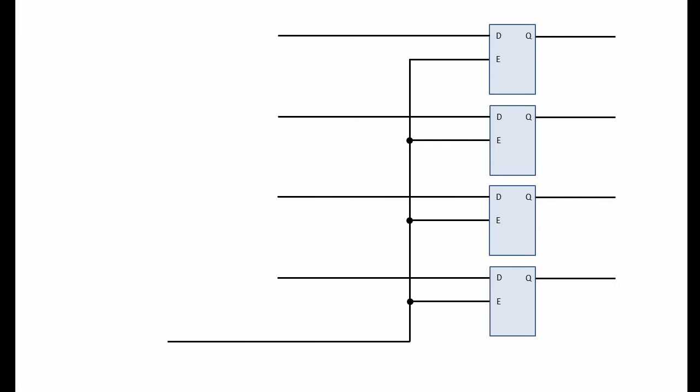That's fine for some applications, but to build a buffer that can hold onto a multi-bit binary number, we need several D-Latches working in tandem. When it comes to changing the data in such a circuit, we need to be able to synchronise the setting of these latches with each other, and of course with other circuits inside the computer. This can be done by connecting the E-inputs of several D-Latches to the same signal.